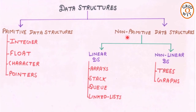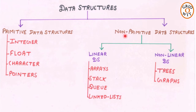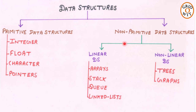Next, the non-primitive data structures are derived from primitive data structures. These data structures always concern with user-defined data types or secondary data types. Hence, the non-primitive data structures are also known as user-defined data structures. Mostly, these non-primitive data structures are based on structuring the group of homogeneous data items or heterogeneous data items.